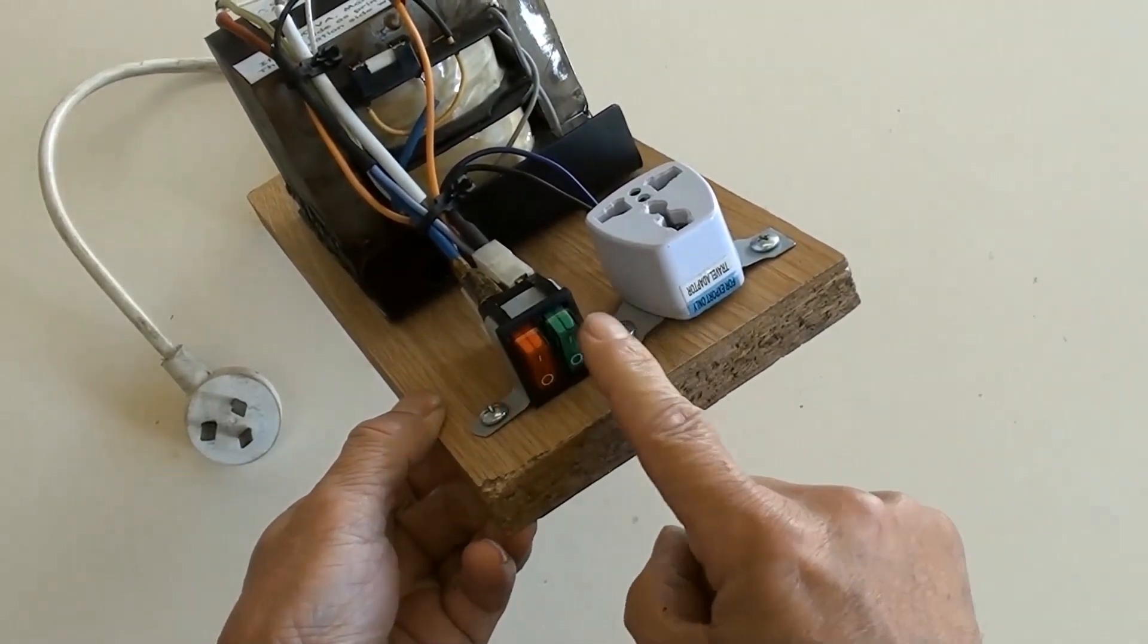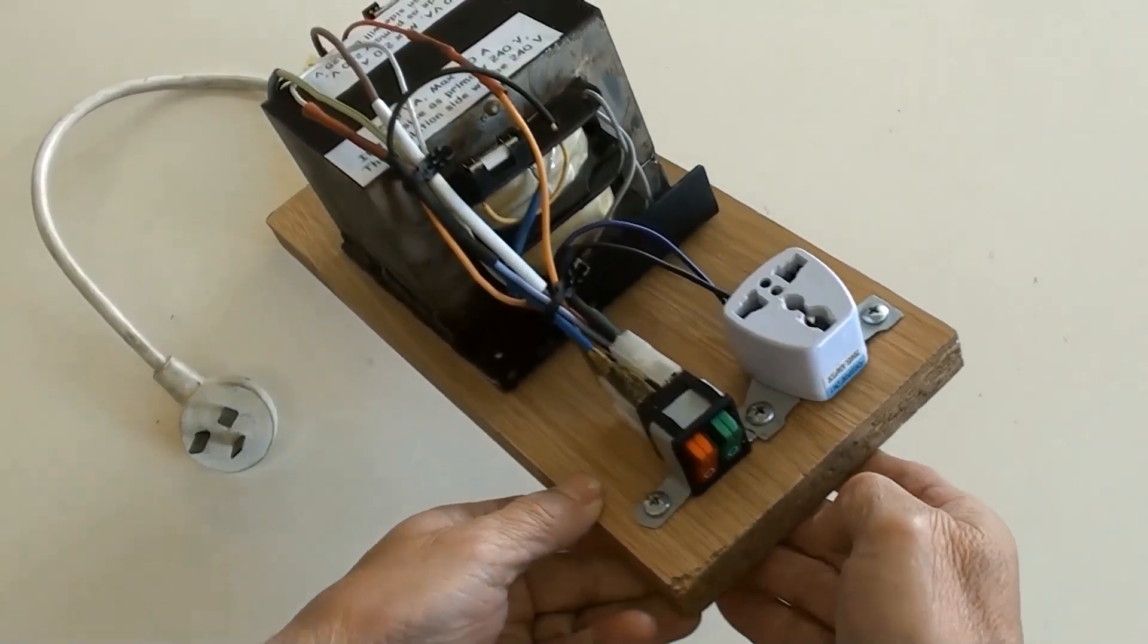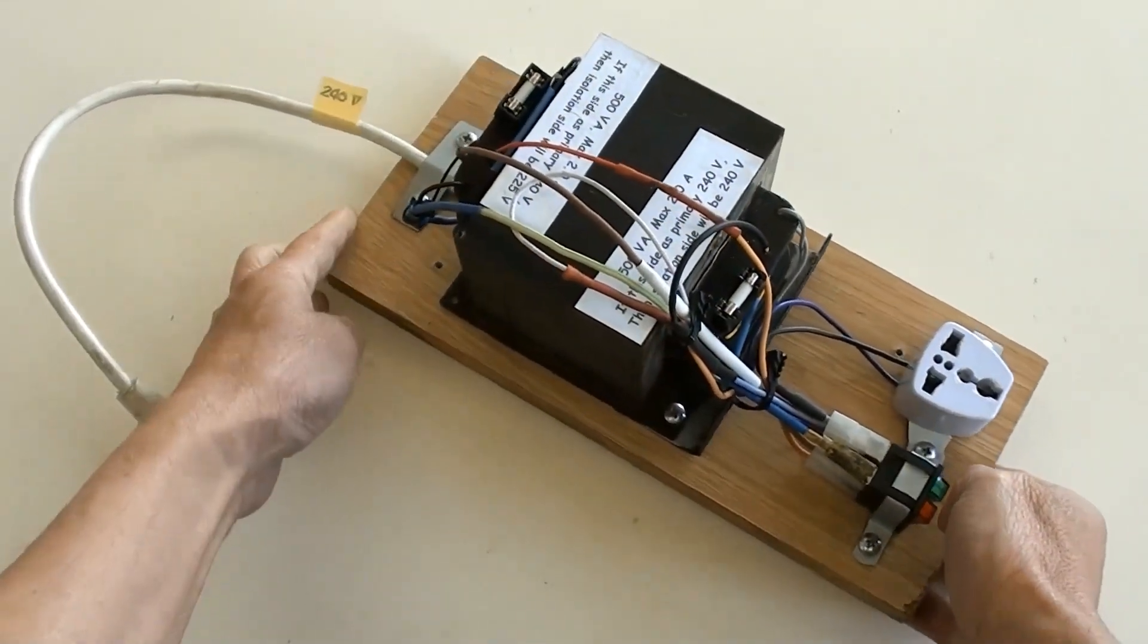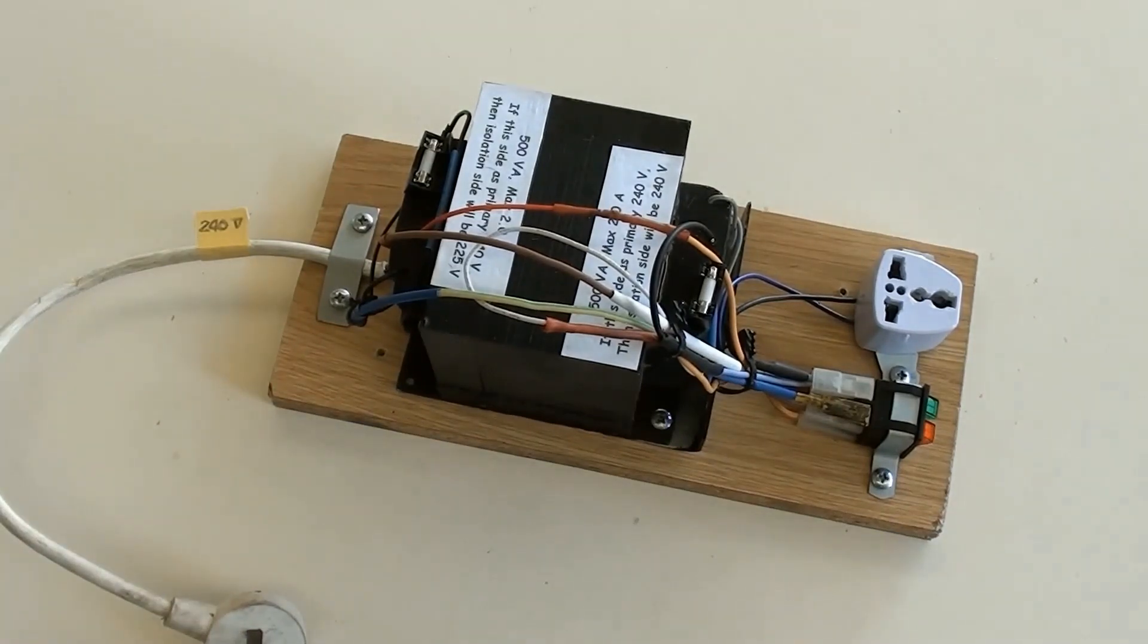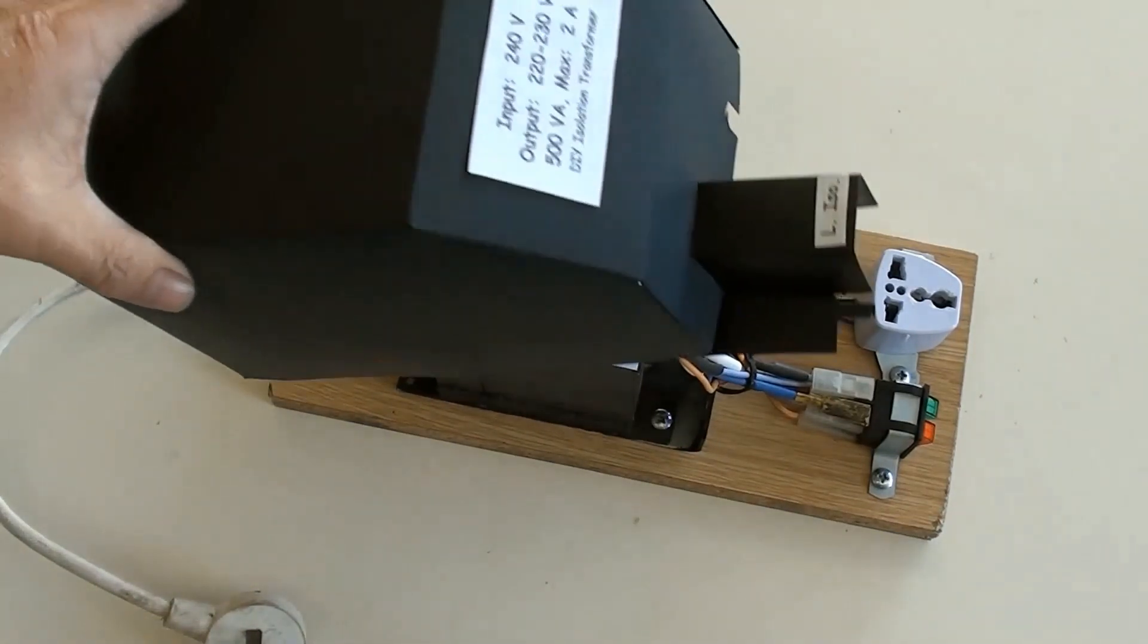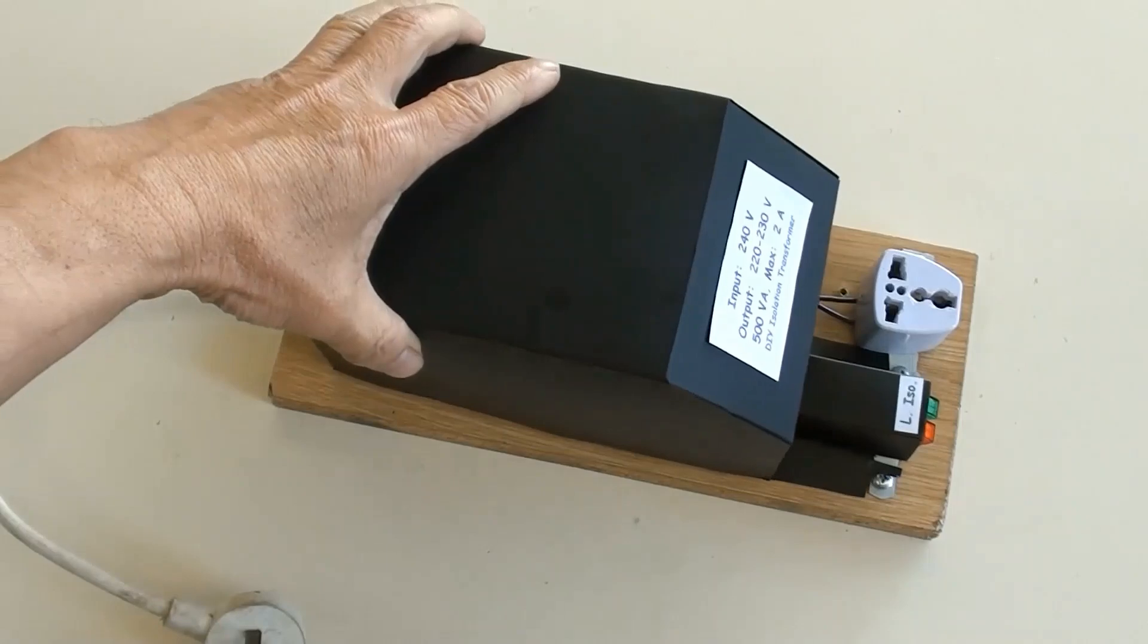Red in color is the live switch, and green in color is the isolation output switch. Then covering them by this DIY transformer cover.